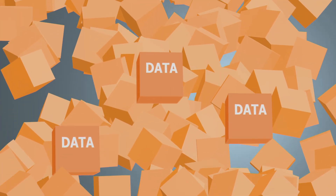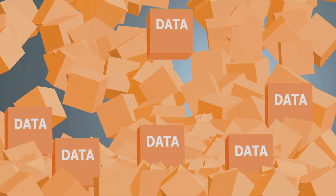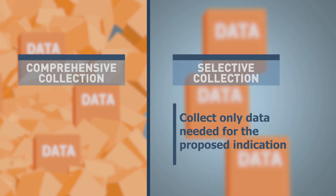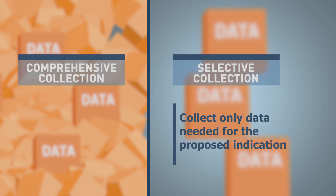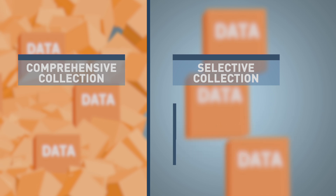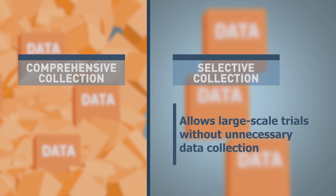Selective safety data collection limits the collection of safety information to specific data needed for drug companies and regulators to make an informed benefit-risk assessment specific to the proposed indication. This reduction in data collection allows the trial to avoid collecting data that would not advance the understanding of a drug's safety, increasing the trial's efficiency and allowing the conduct of large-scale trials to answer important questions about long-term efficacy and safety without repeating unnecessary collection of some types of data.